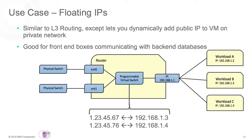Traffic coming in from the external wide area network sent to 1.23.45.67 will be forwarded on to workload B. The workload itself never knows that public IP address — it's all translated through the router. VXLAN network creation is instantaneous and you can have millions, so create them as you see fit. But SDN has more features than overlay networks.